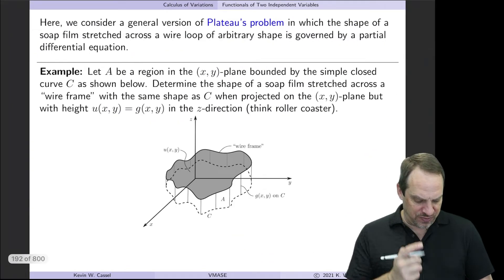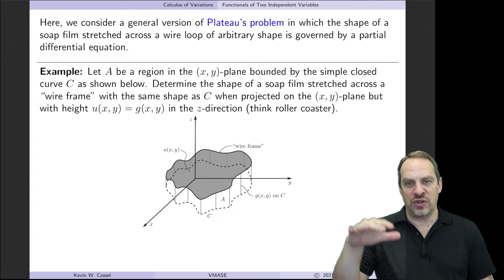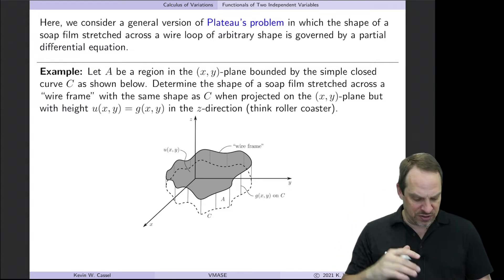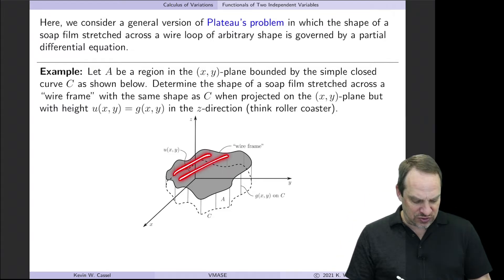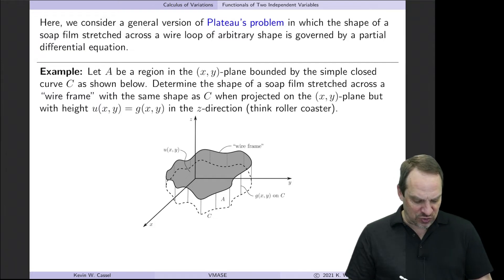So let's consider Plateau's problem. Let's take a, you can think of this as like a roller coaster. So this is a wire frame that goes up and down, so the height changes as you go around. And then you put a soap film stretched across that wire. And the question is, what is the shape of that soap film within that domain?